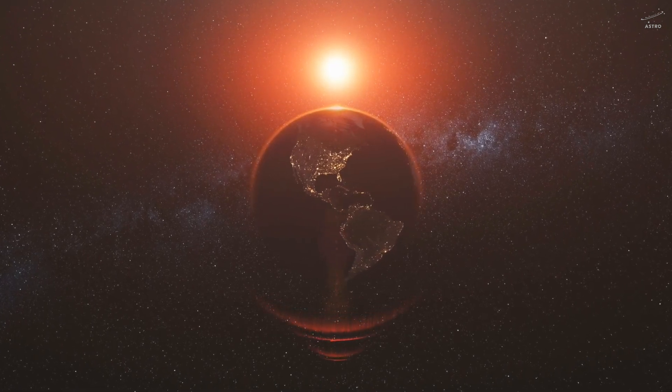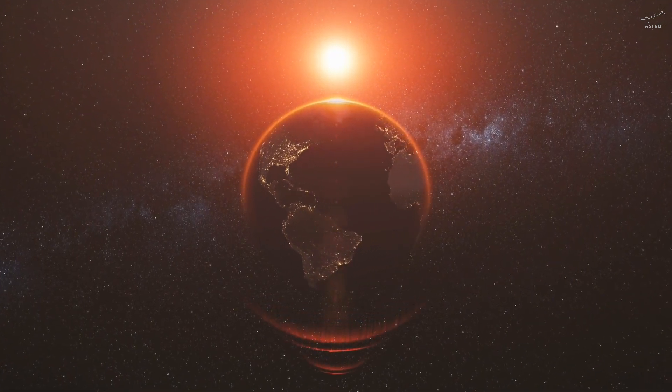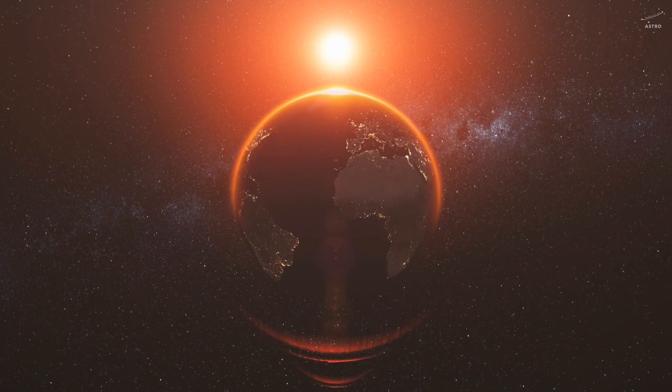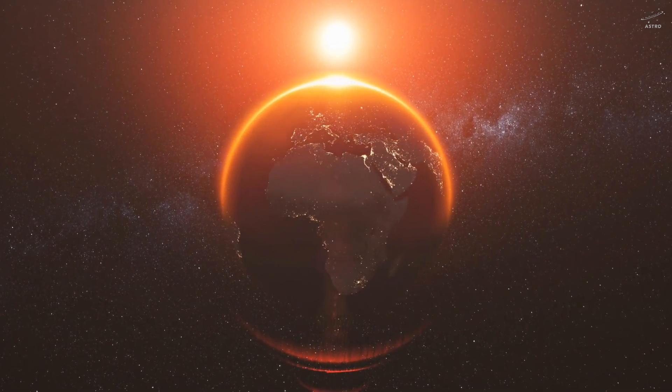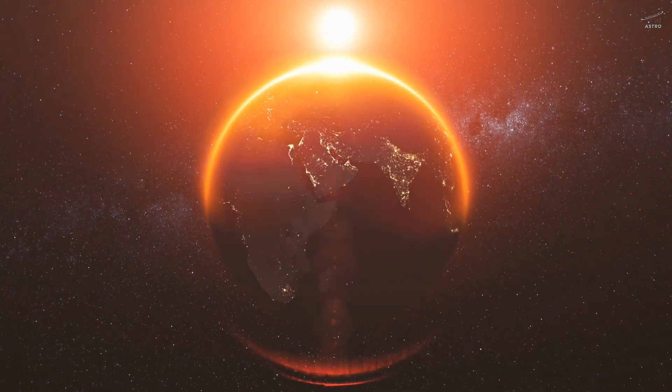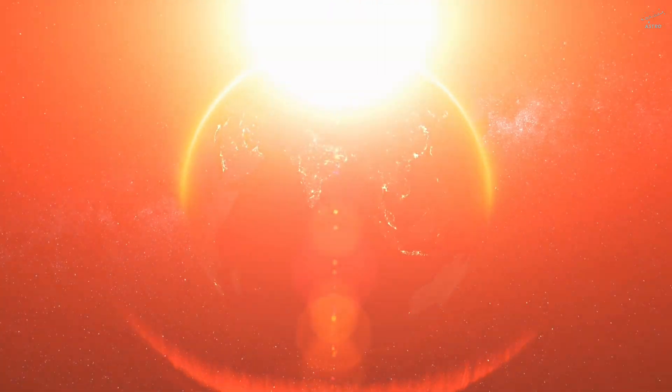Some simulations suggest Earth might slip away, just enough to escape the fate of Mercury. It might stay outside the sun's reach, spared from the fire. But in other scenarios, the line is thin. All it takes is a tiny shift, a little more drag from the sun's expanding atmosphere, a small nudge in Earth's momentum, and we're caught, dragged in, and swallowed.